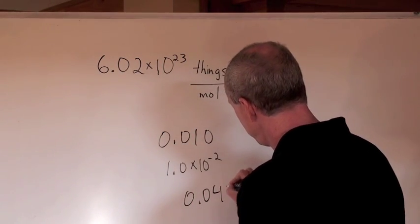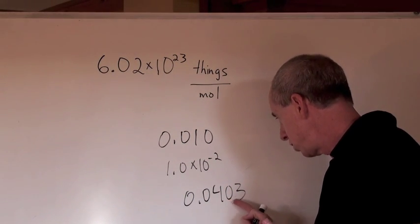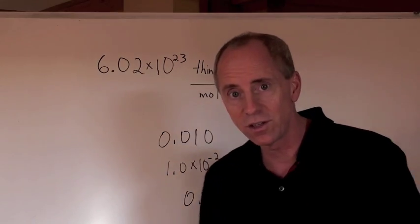How many significant digits does this number have here? Well, that number's got—doesn't count, doesn't count—1, 2, 3. That's got three significant digits.